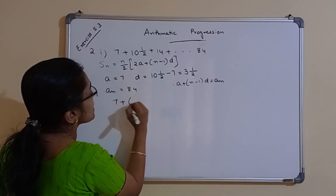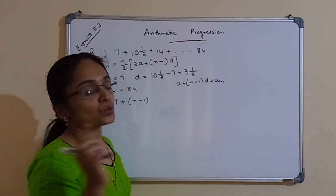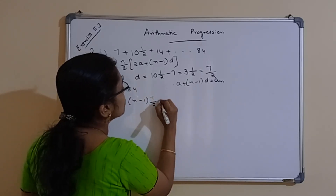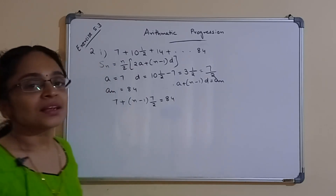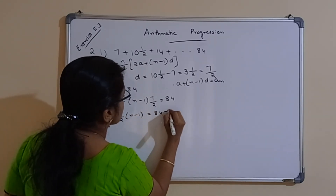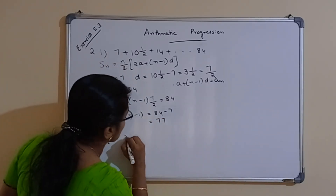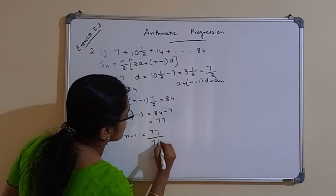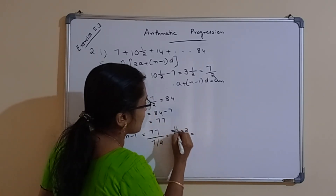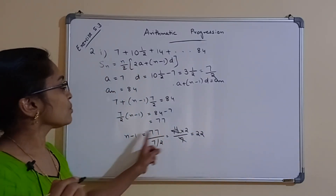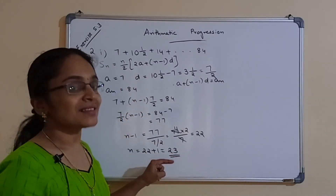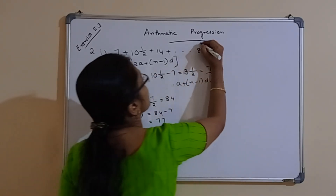So A is 7 plus (n−1) into D, which is 3½, and 3½ can be written as 7/2. So 7 + (n−1)×(7/2) = 84. Taking 7 to the right-hand side: (7/2)×(n−1) = 84 − 7 = 77. So n−1 = 77 ÷ (7/2) = 77 × (2/7) = 22. Therefore n = 22 + 1 = 23. This means the number of terms in this AP is 23.